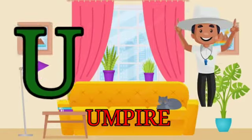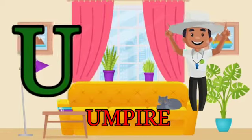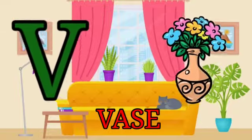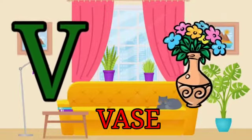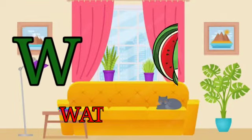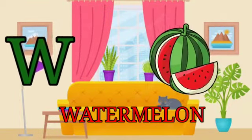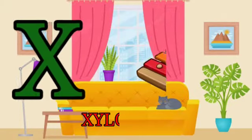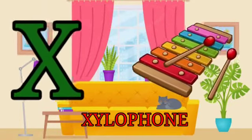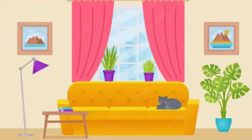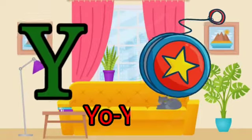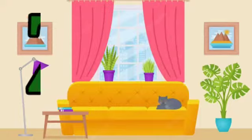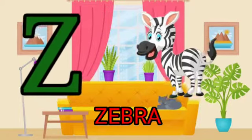U for umbrella, V for vase, W for watermelon, X for xylophone, Y for yoyo, Z for zebra.